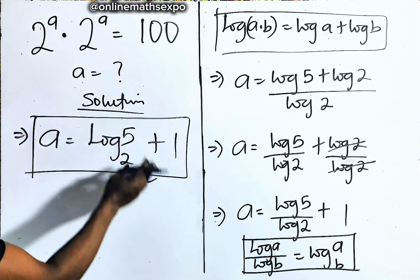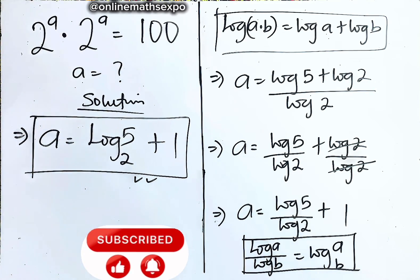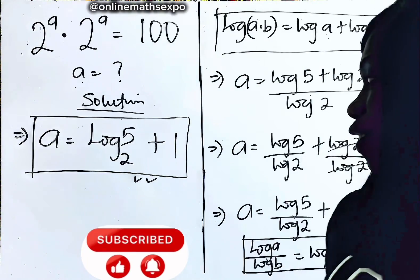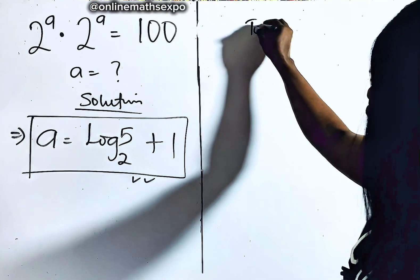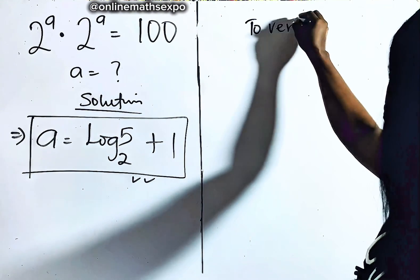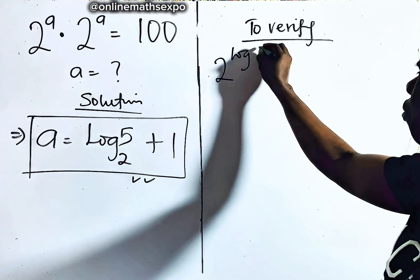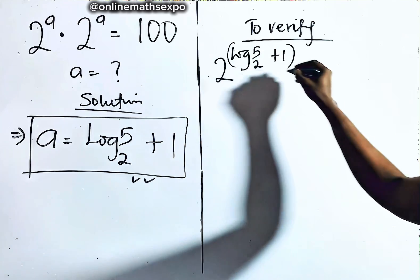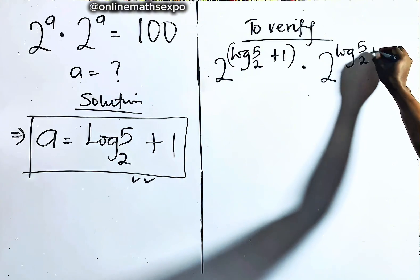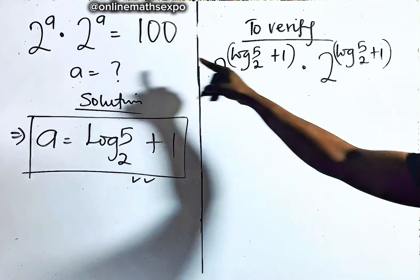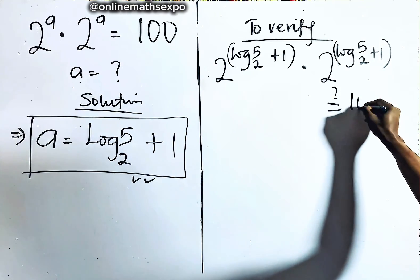Now we are going to plug this value of a back into the left side to see if it gives us back 100. Let's verify this together. So we have 2 to the power of (log of 5 base 2 plus 1), multiplied by 2 to the power of (log of 5 base 2 plus 1). Would this give us 100? Let's find out.